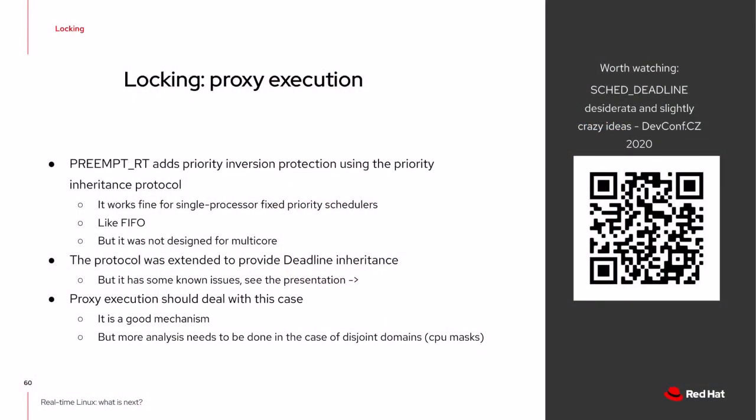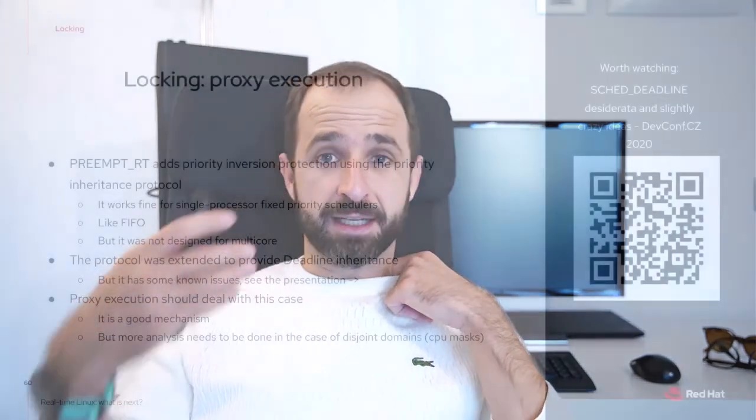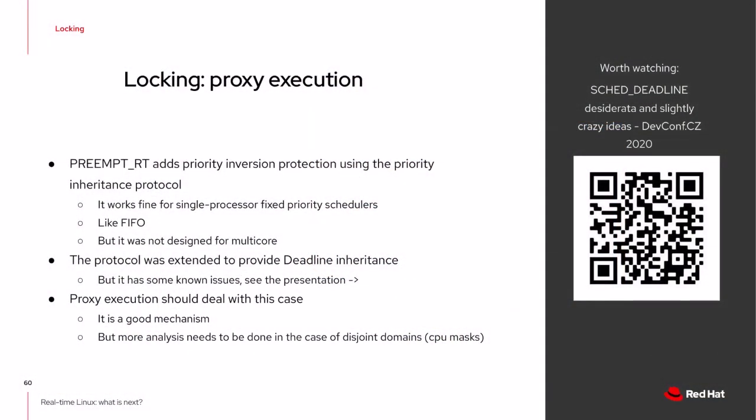Another problem is that in preempt RT, priority inversion protection uses the priority inheritance protocol, which works well for single-core fixed-priority schedulers, but not for SCHED_DEADLINE where each activation has a different priority — the highest-priority thread is always a different thread. We are trying to address this using deadline inheritance, but there are known issues with it. One idea is to use proxy execution to overcome this problem, but we need to further develop the analysis of the proxy execution mechanism in the Linux kernel given all the restrictions it imposes.